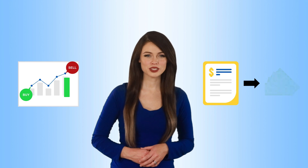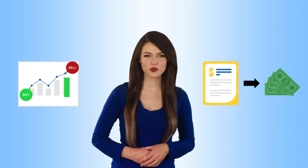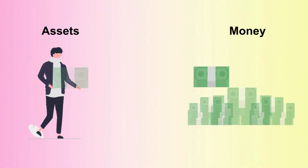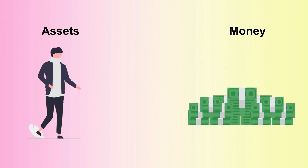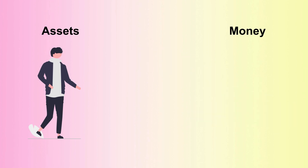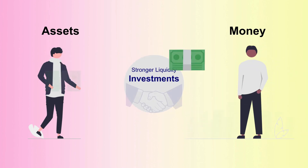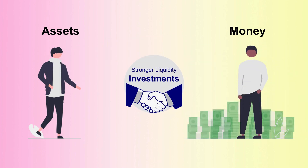The degree to which a security can be sold or bought at a price reflecting its current value is referred to as liquidity in the financial markets. It indicates how quickly you can cash in on an asset. When you can quickly turn your investments into cash, you can say they have stronger liquidity.